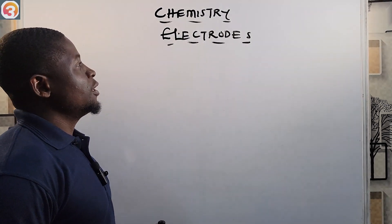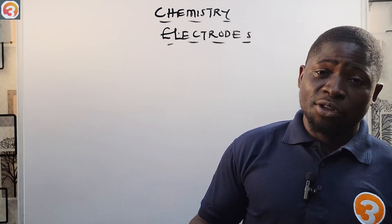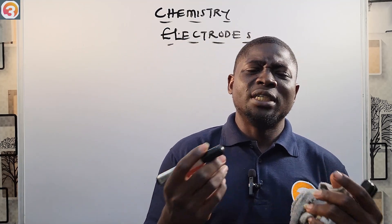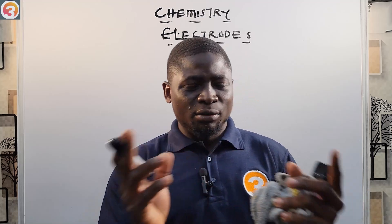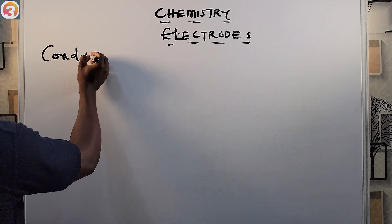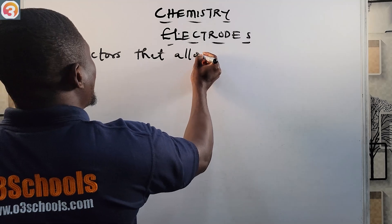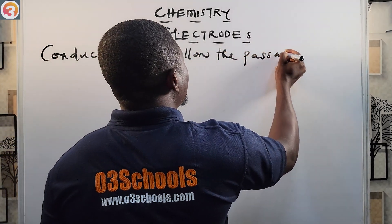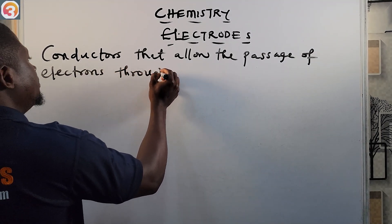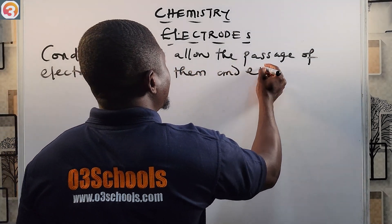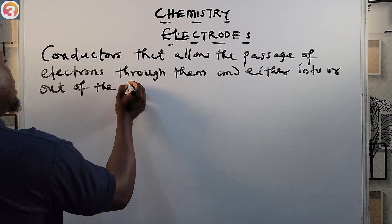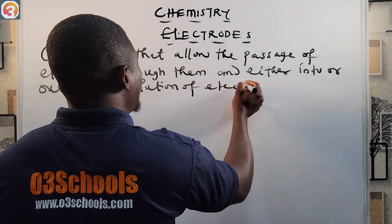Now let's talk about electrodes. Electrodes are conductors that allow the passage of electrons or electric currents through them, and either into or out of the solution of electrolytes.